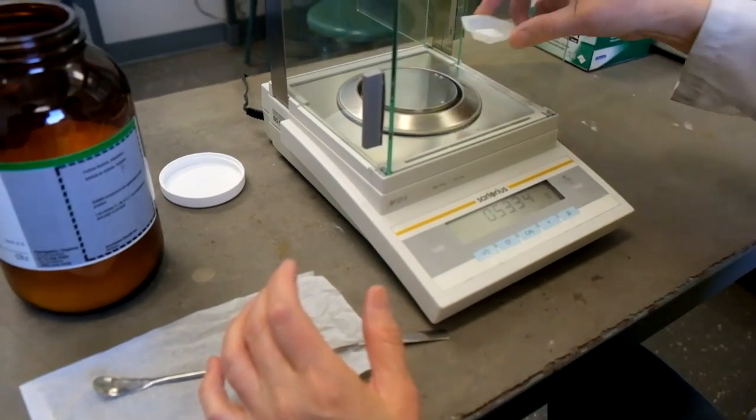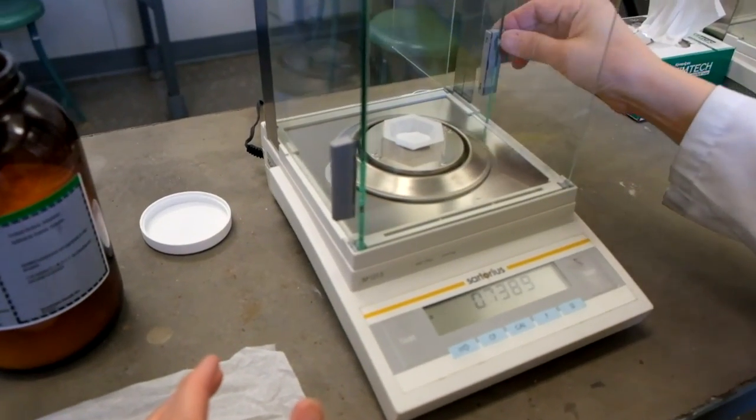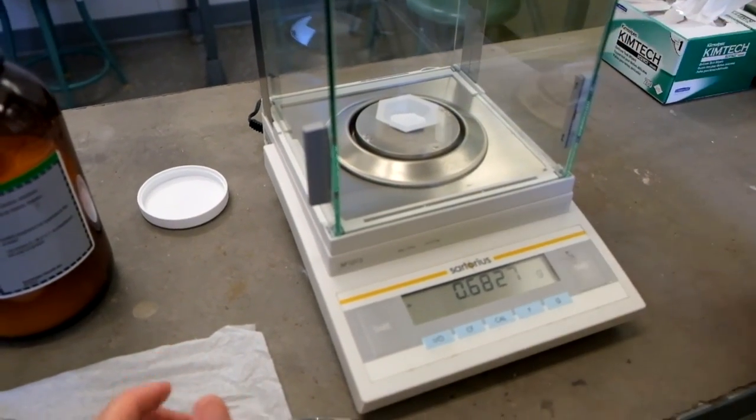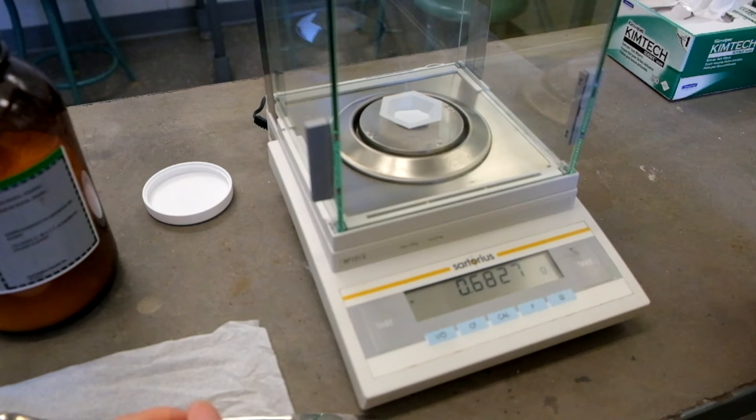Return the weigh boat to the balance chamber and take another reading. This time, the mass of the sodium acetate in the weigh boat is 0.6827 grams, which is within the range that we were aiming for. We have successfully weighed the desired quantity of sodium acetate.